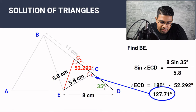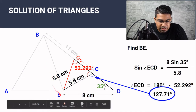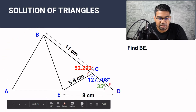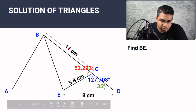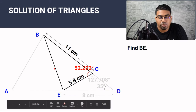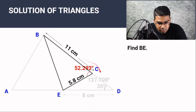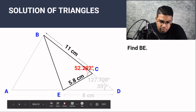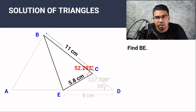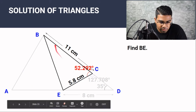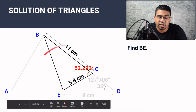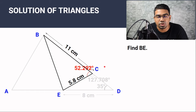We've also found angle ECB. After using the sine rule, this is all the information we have. Now when we look at triangle BEC, we have three pieces of information — two sides and one angle. There are two instances where we use the cosine rule: when we have two sides and the angle between them, or when we have the lengths of all three sides. Then it is useful to use the cosine rule.